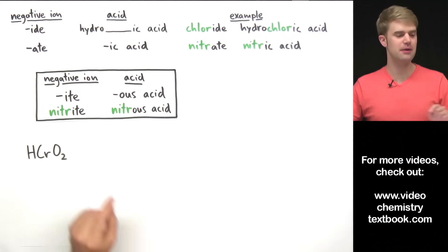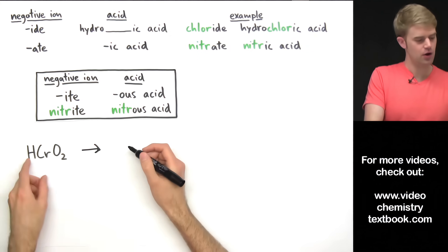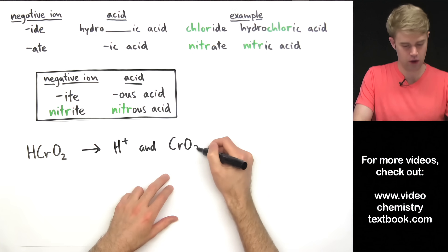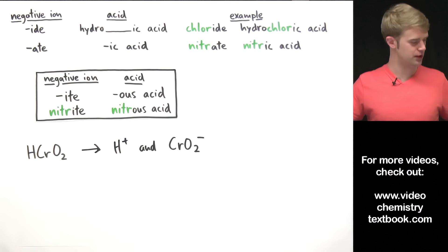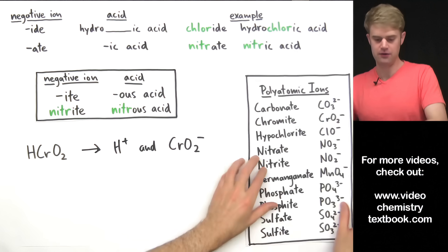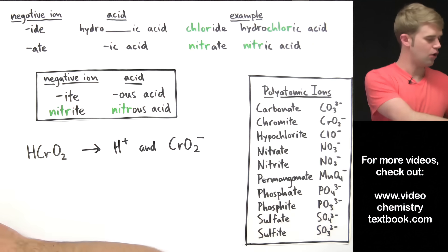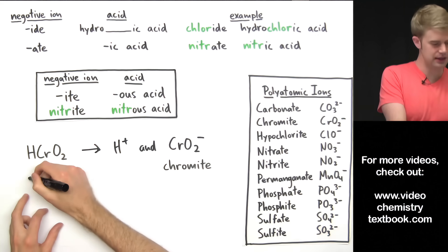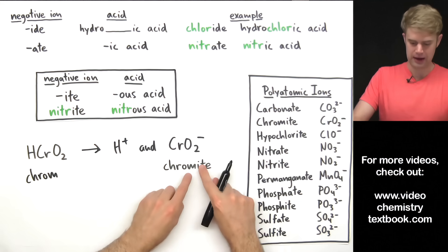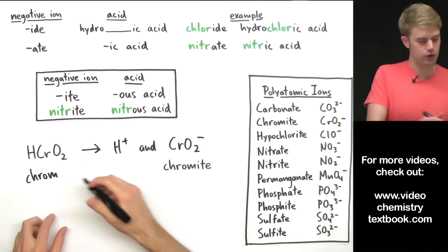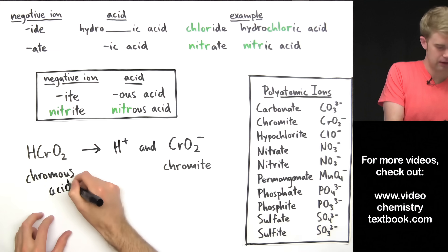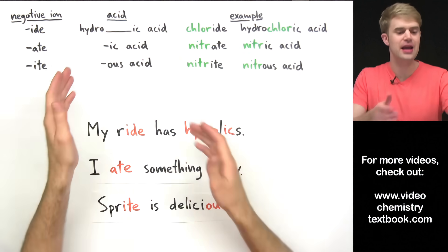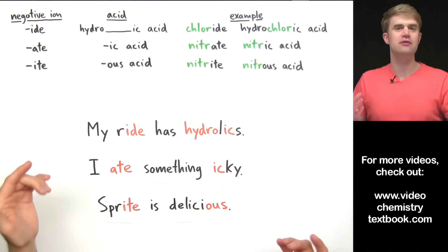Here's one more example of naming with -ite. We have this acid which we break apart into H+ and CrO2- with a 1- charge to balance the 1+. The negative ion CrO2 1- is chromite, which means the name of the acid containing it follows the same rule: take off the -ite, replace it with -ous, and add acid. So it has chromite in it — we call it chromous acid.